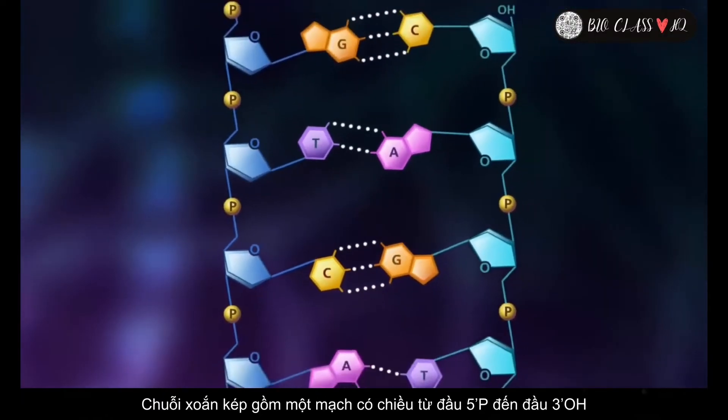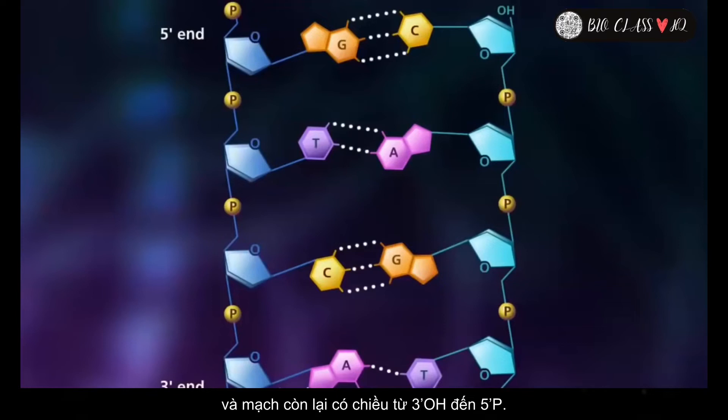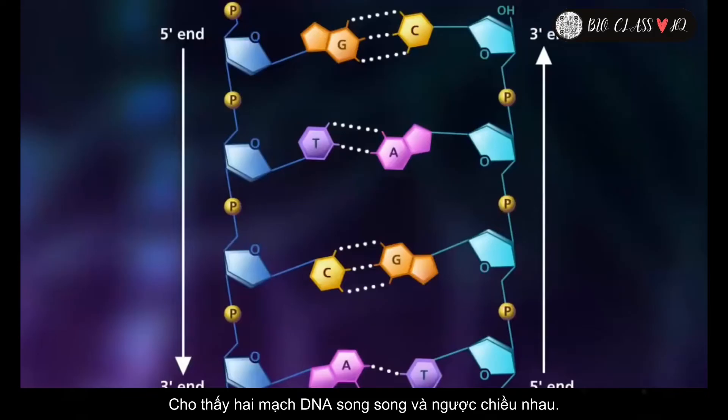The double helix will have one strand oriented in a 5' to 3' direction relative to the hydroxyl group of the deoxyribose sugar, and the other strand oriented in a 3' to 5' direction. This shows the anti-parallel nature of the DNA strands.